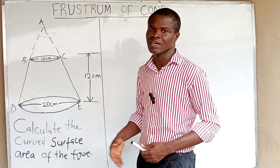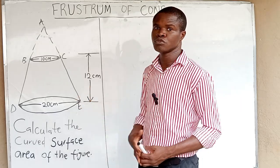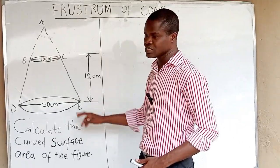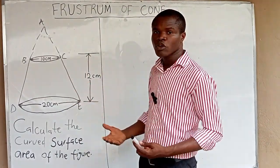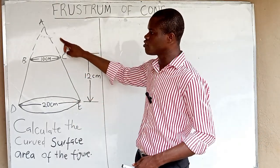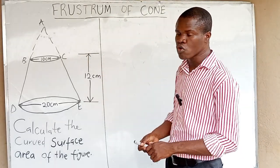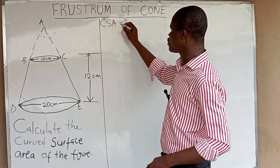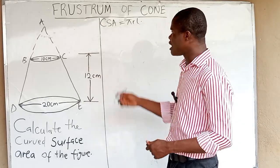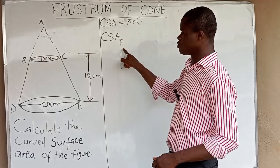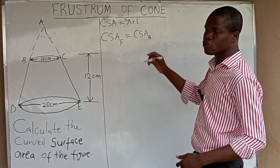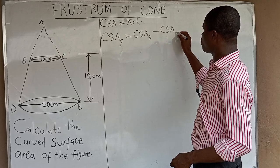The formula for curved surface area is given as π R L, where R is the radius of the cone and L represents the slanted height of the cone. In this frustum, we are given the diameter of the base, diameter of the top, and the height of the frustum. We are not given the slanted heights, so we need to determine them. The formula for the curved surface area of the frustum is: CSA of frustum = CSA of bigger cone minus CSA of smaller cone.